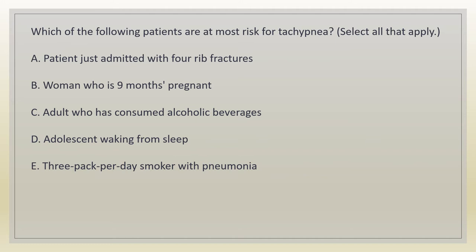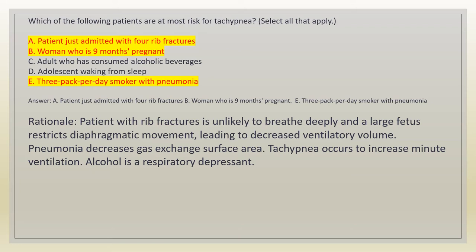Which of the following patients are at most risk for tachypnea? Select all that apply. A. Patient just admitted with 4 rib fractures. B. Woman who is 9 months pregnant. C. Adult who has consumed alcoholic beverages. D. Adolescent waking from sleep. E. 3 pack per day smoker with pneumonia. Answer: A, B, and E. Rationale: patient with rib fractures is unlikely to breathe deeply; a large fetus restricts diaphragmatic movement leading to decreased ventilatory volume; pneumonia decreases gas exchange surface area and tachypnea occurs to increase minute ventilation. Alcohol is a respiratory depressant.